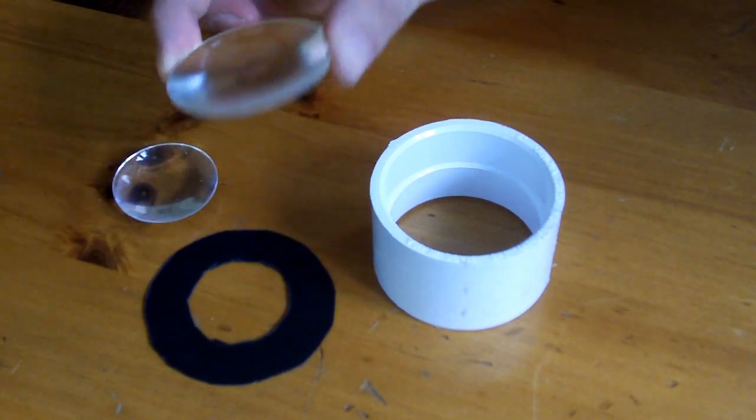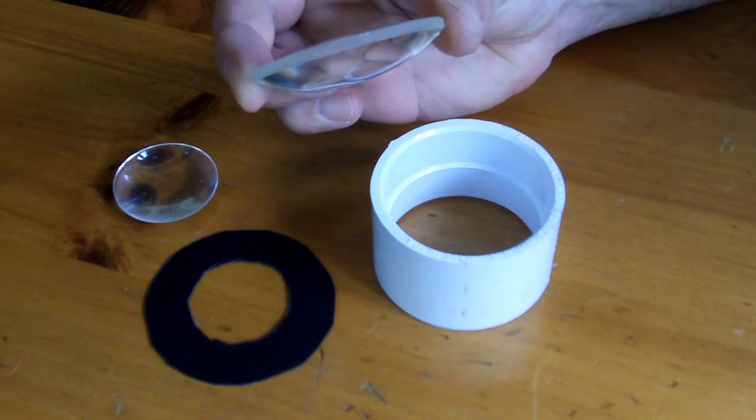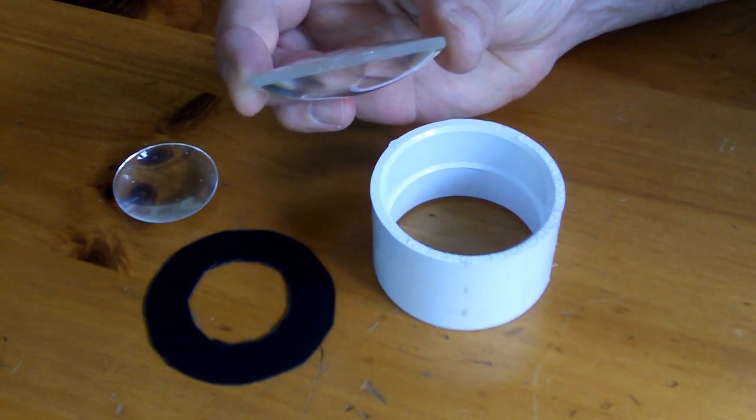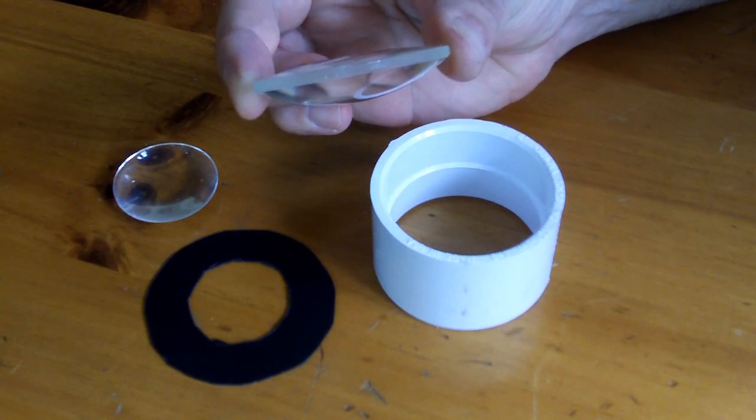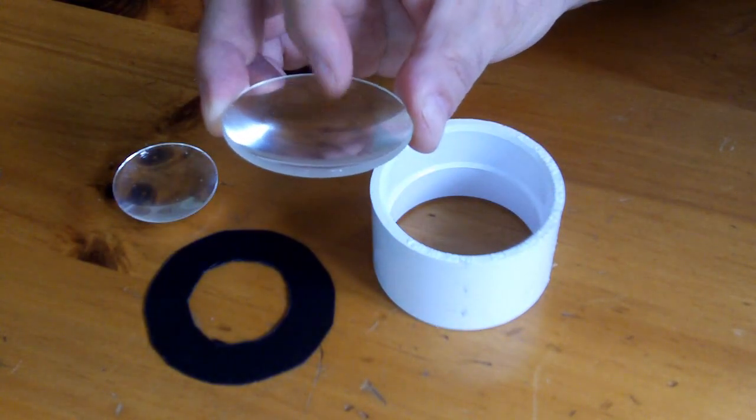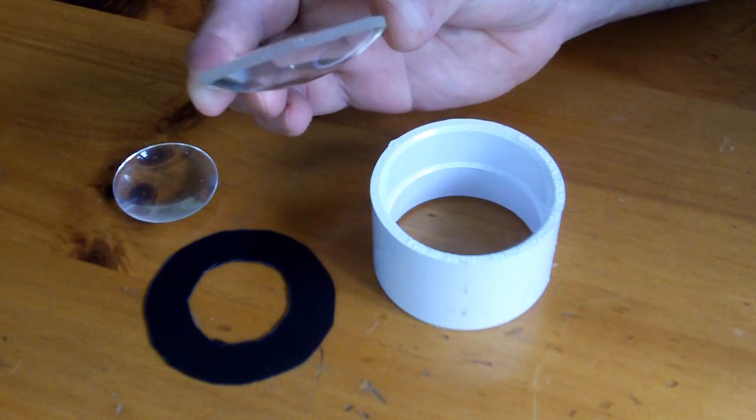This lens, you'll notice, even though it says double convex, is really much more convex on what's going to be the bottom side and pretty flat on what is going to be the top side. So just remember that.